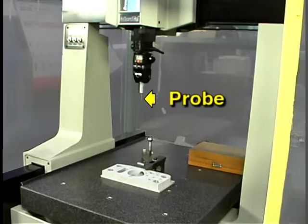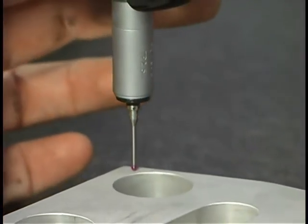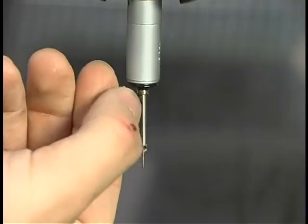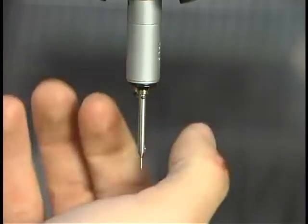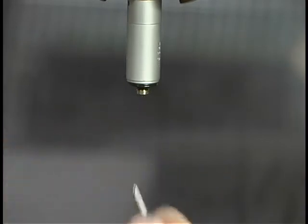This is the probe. The probe and probe tip can be adjusted to measure various part features. The probe tip can be replaced if a different diameter tip is required for the feature being measured or if a tip becomes damaged.